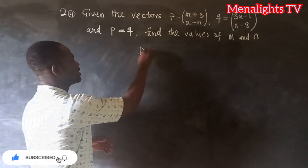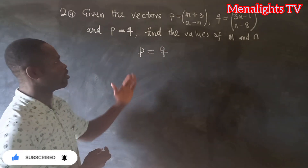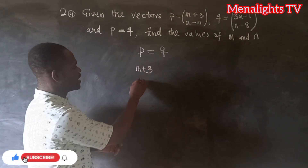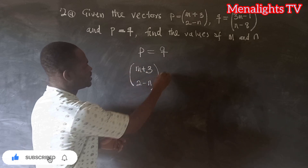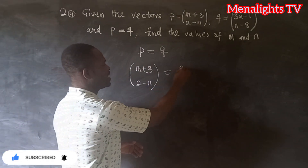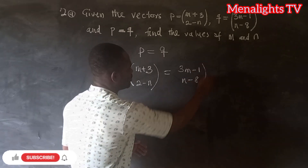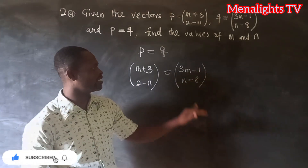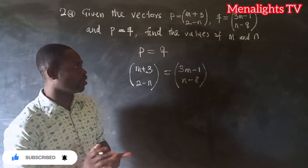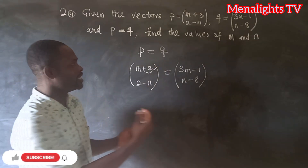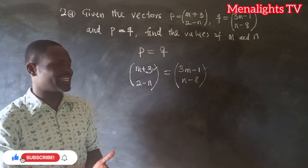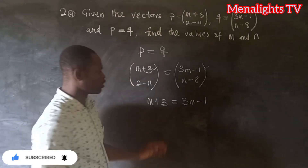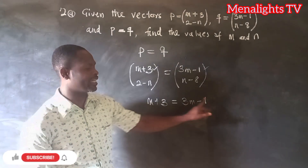Since p equals q, we write: (m+3, 2−n) = (3m−1, n−8). Since the two vectors are equal, the corresponding components must be the same. So from the x-components: m + 3 = 3m − 1.